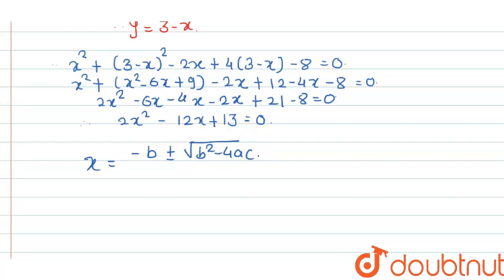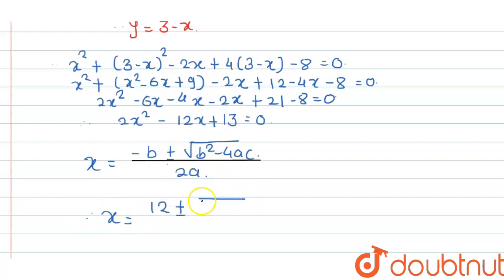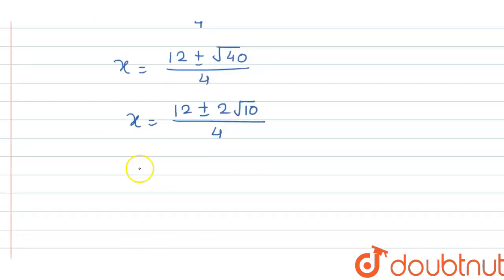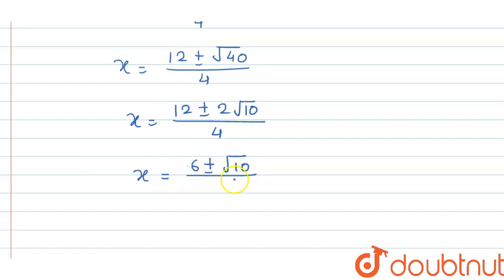Using the quadratic formula x = (-b ± √(b² - 4ac)) / 2a, we get x = (12 ± √(144 - 104)) / 4, which equals x = (12 ± 2√10) / 4. Finally, x = (6 ± √10) / 2.